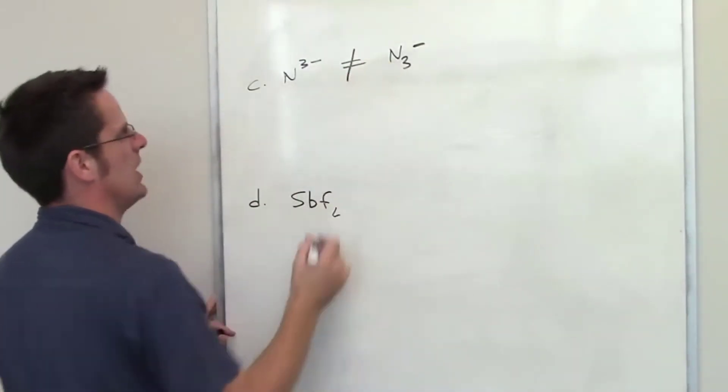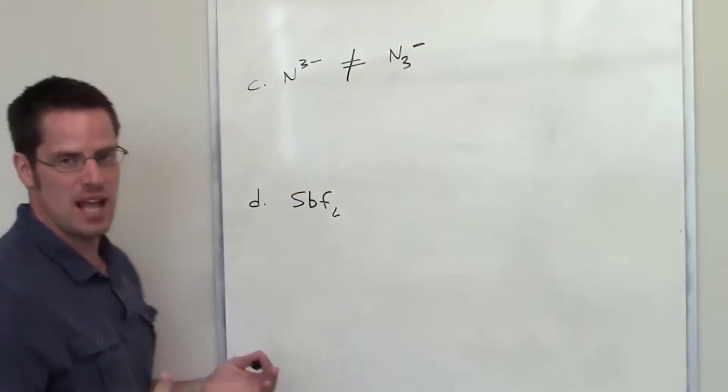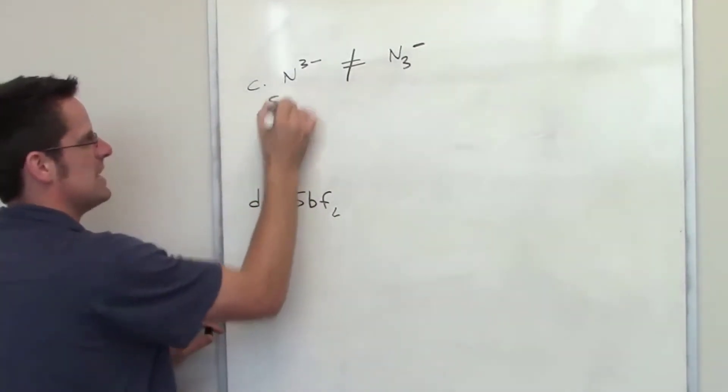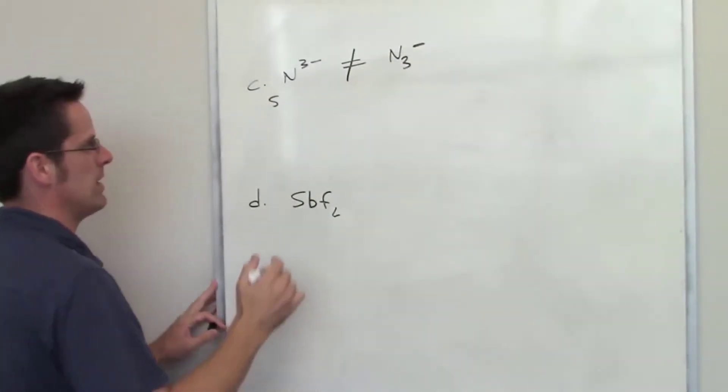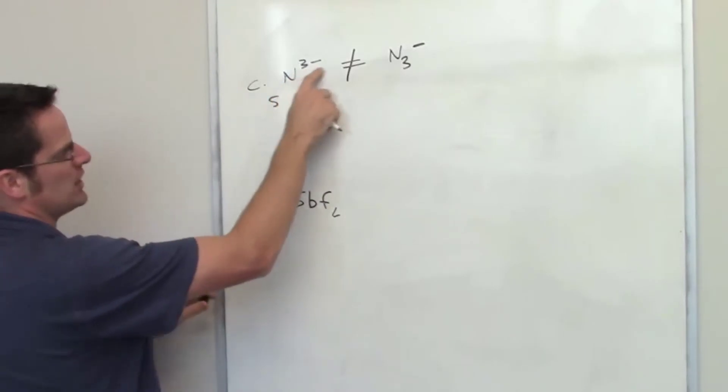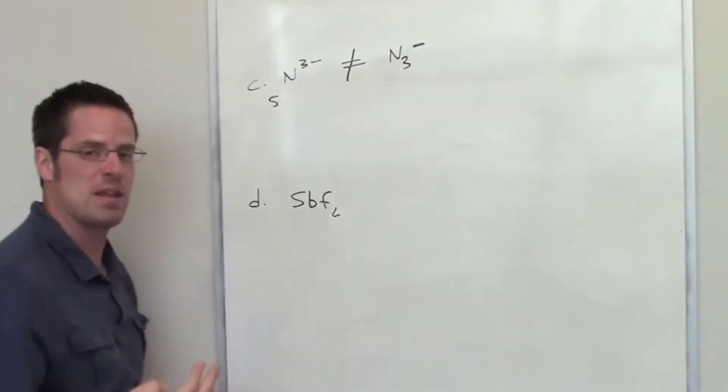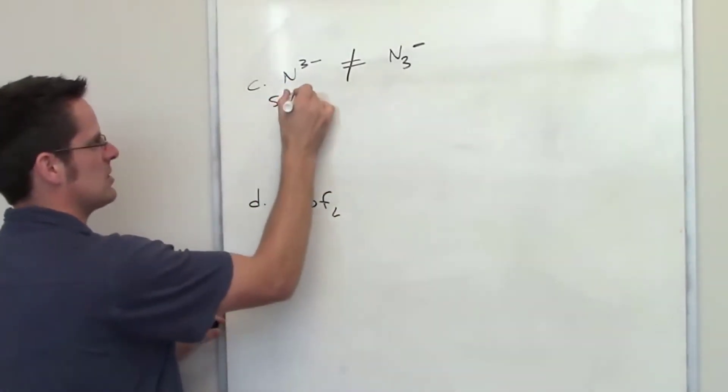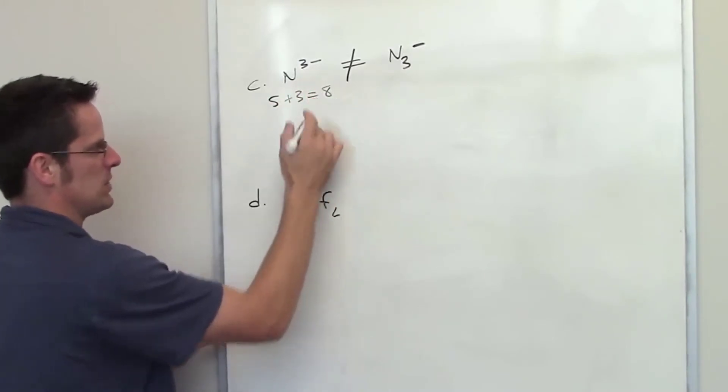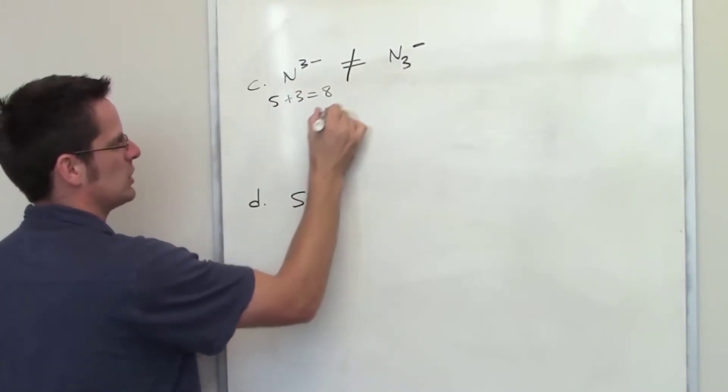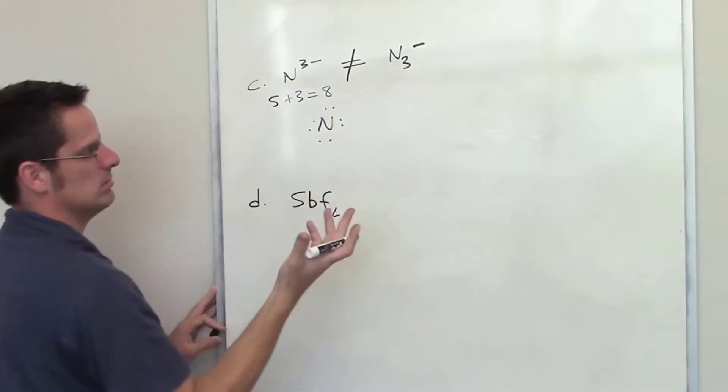So these are not the same. Nitrogen by itself has five valence electrons because it's in column 5A of the periodic table. I've got a charge of negative 3 there, which means there have been three extra electrons added to the system. You add that up, that equals eight.